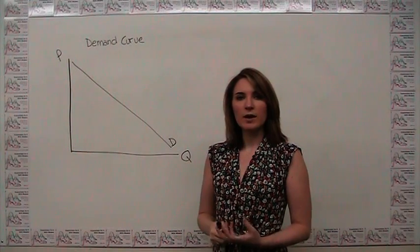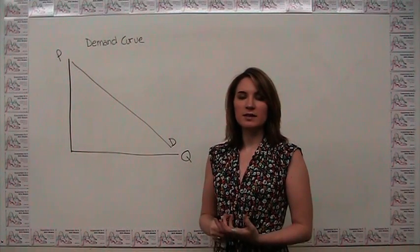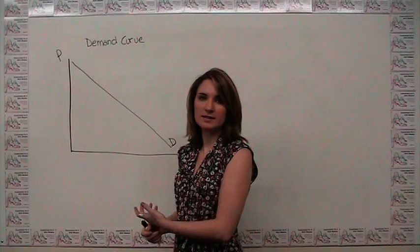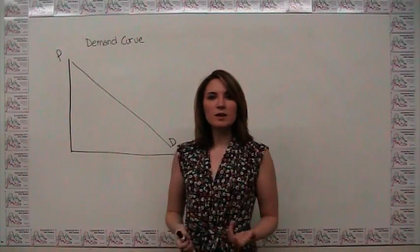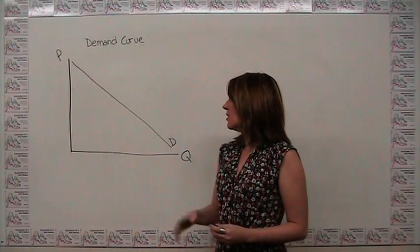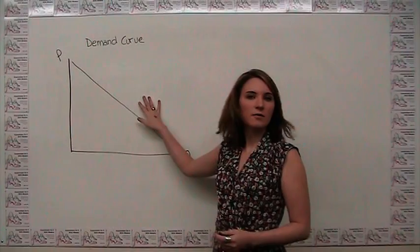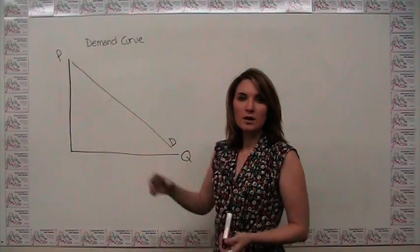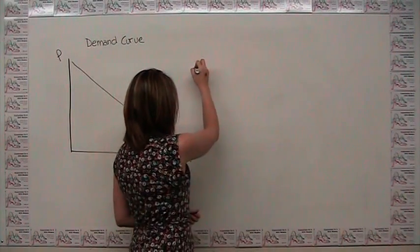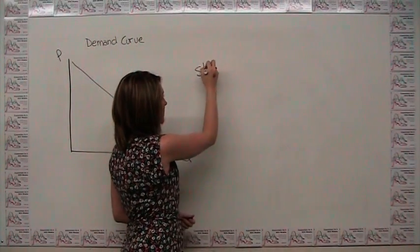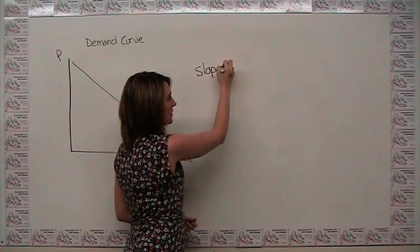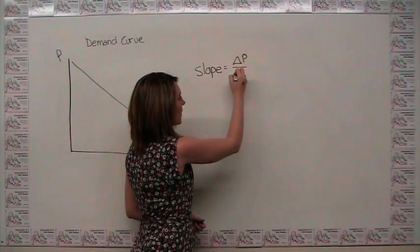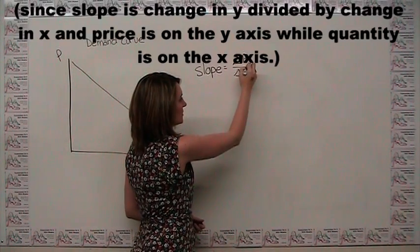For example, when we're talking about a demand curve, we'd like to know how responsive quantity demanded is to things like price. The most obvious option is just to think about the slope of the demand curve, which is equal to the change in price divided by the change in quantity.